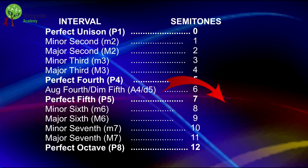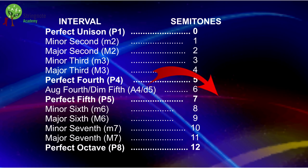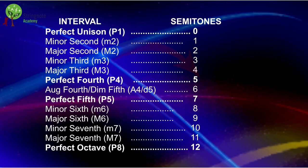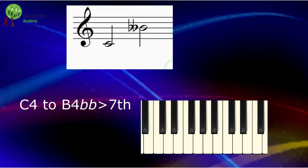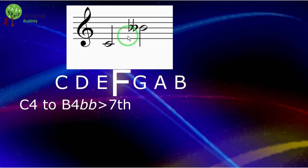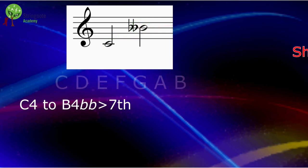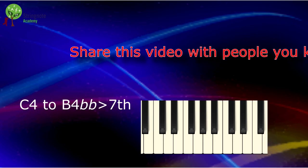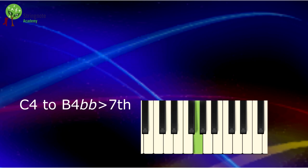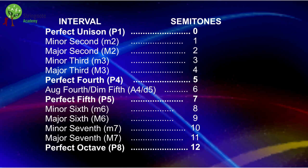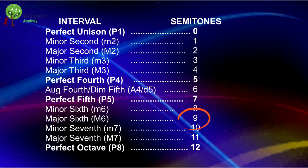When the number of semitones is too big for what is specified in our table, we are facing an augmented interval. When the number of semitones is too small, we are facing a diminished interval. If I have this interval, I know that this is a seventh: one, two, three, four, five, six, seven. If I count the semitones, I have nine semitones. But I don't have a seventh with nine semitones in my table — I have a minor seventh with ten and a major seventh with eleven, but not one with nine. So this is a diminished seventh.